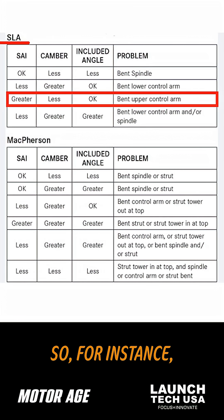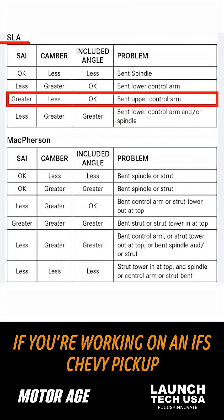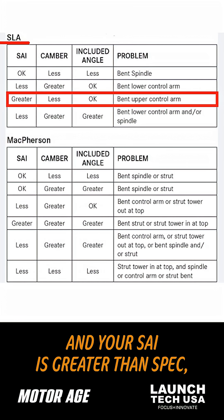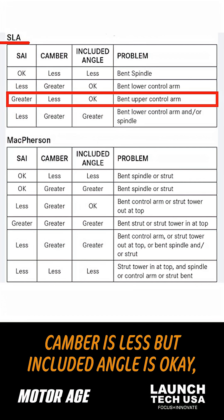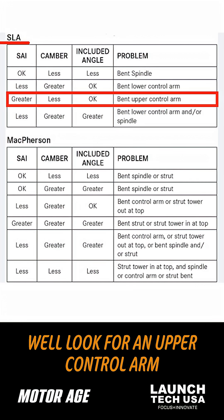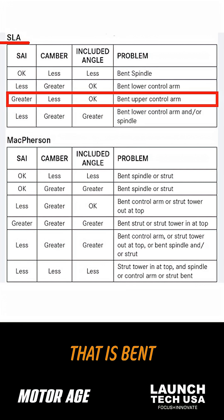For instance, if you're working on an IFS Chevy pickup and your SAI is greater than spec, camber is less, but included angle is okay, then look for an upper control arm that is bent.